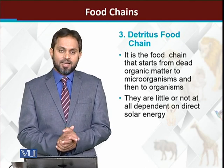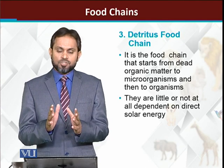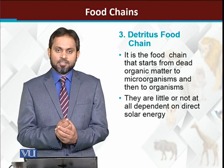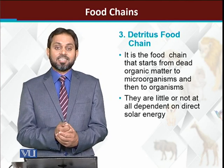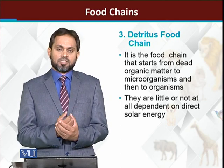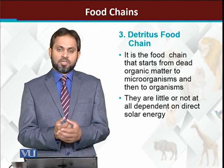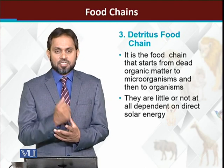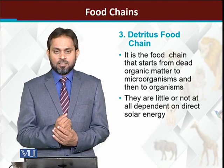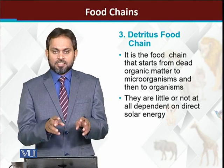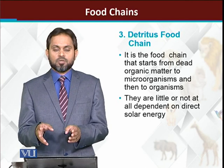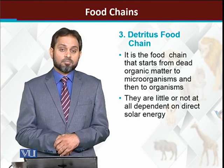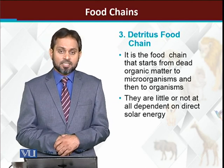The second type of food chain is the detritus food chain. The detritus food chain is a food chain in which the starting point is decaying material, not green plants. A food chain that starts from decaying material is called the detritus food chain.